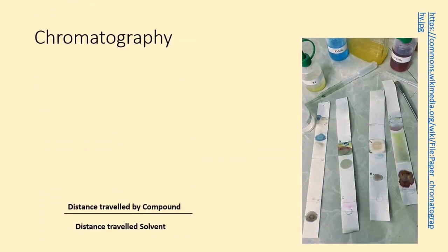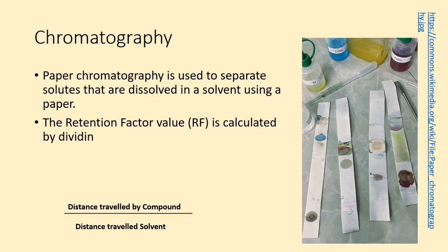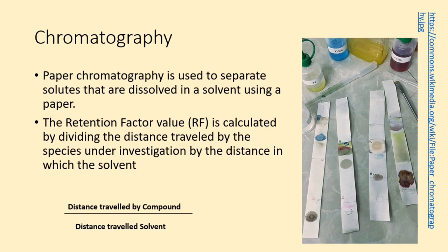Paper chromatography is used to separate solutes that are dissolved in a solvent using a paper. The retention factor value (RF) is calculated by dividing the distance traveled by the species under investigation by the distance which the solvent has traveled.